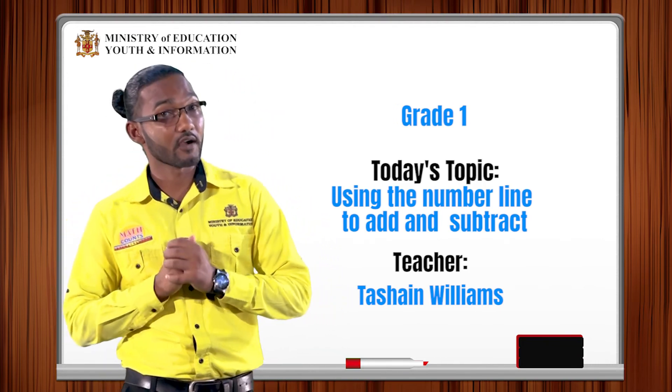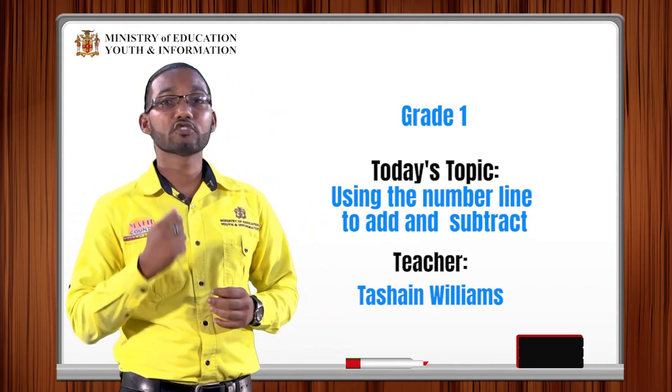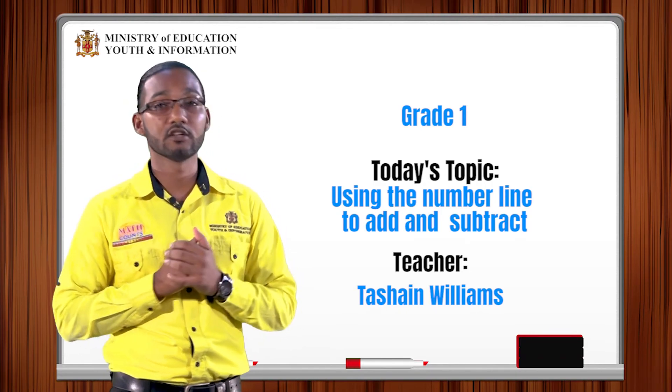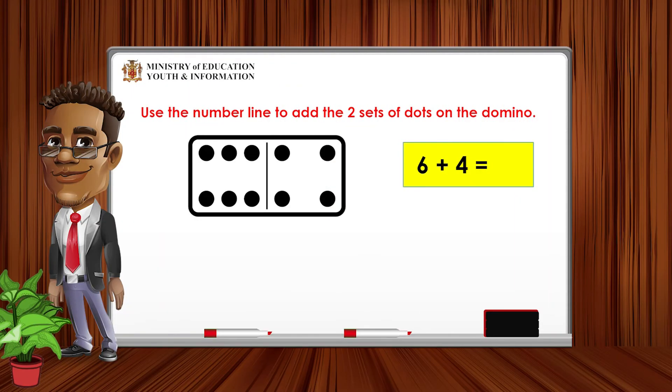Very good work so far boys and girls. Let us try some more addition and subtraction problems using the number line. Our next problem is on a domino. Look carefully. There are two numbers represented on the domino.